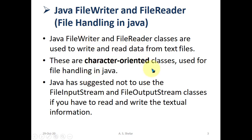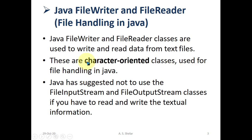For file handling, Java has two approaches available: one is a character-oriented approach and the other is a byte-oriented approach. The character-oriented approach uses FileWriter and FileReader classes. These classes are used to write and read data from text files — this is important: text files. These are character-oriented classes, meaning you can read and write data in human-readable form. Java suggests not using FileInputStream and FileOutputStream if you need to read and write textual information.